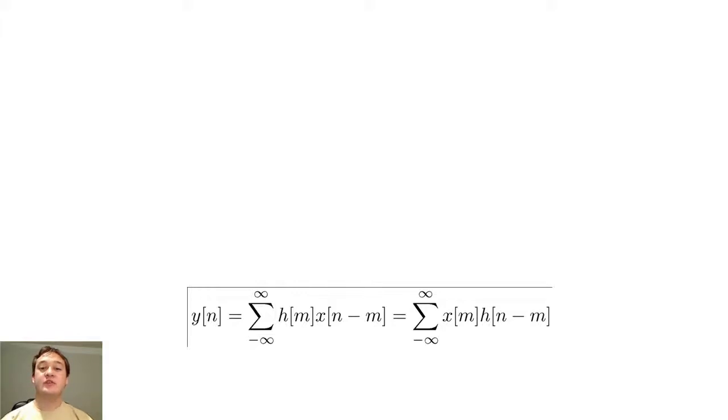Now that we have discussed the unit pulse response, let's return to the convolution formula and answer the question: why must we flip and shift the input?